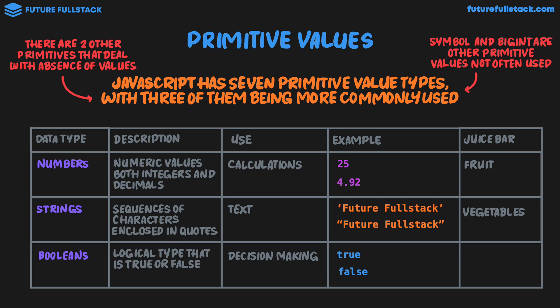As a small example, let's say we're writing some code to give a pass or fail mark for a student where the pass mark is more than 50. We would use a boolean to decide whether what the student scored is more than or less than the pass mark. In our juice bar analogy, booleans are like brown or white sugar — there are only two possible values a boolean can take: true or false.